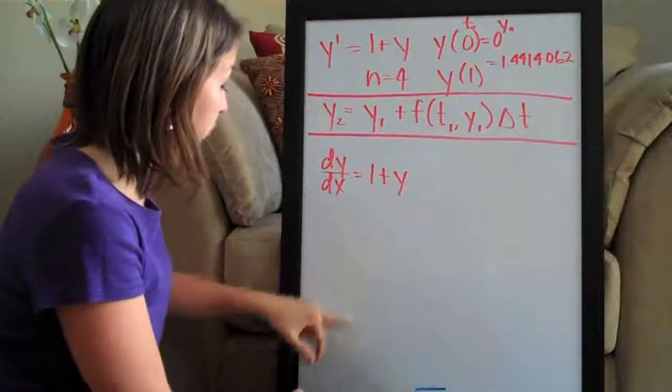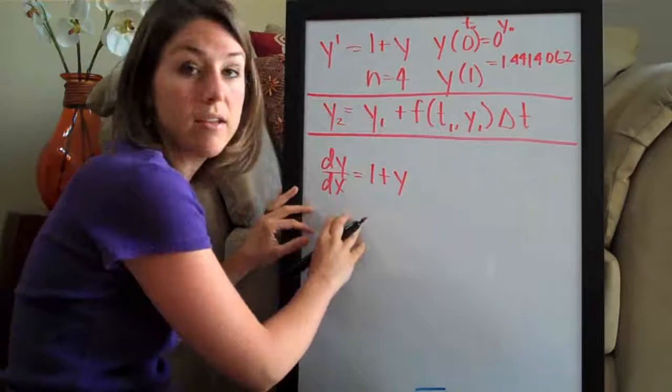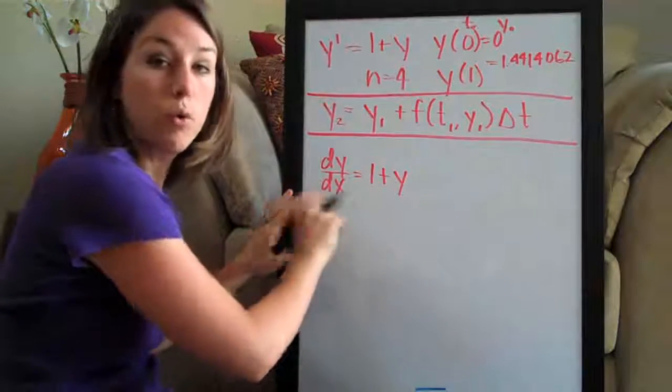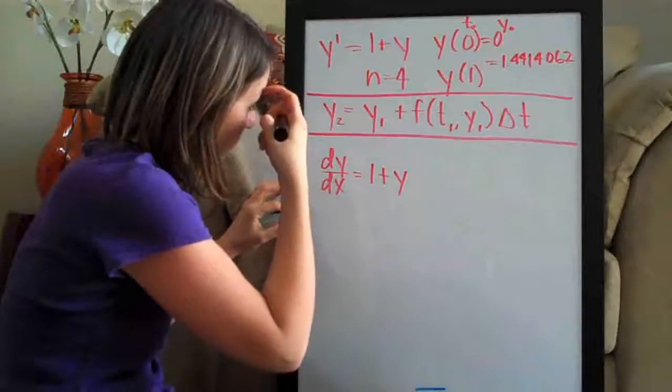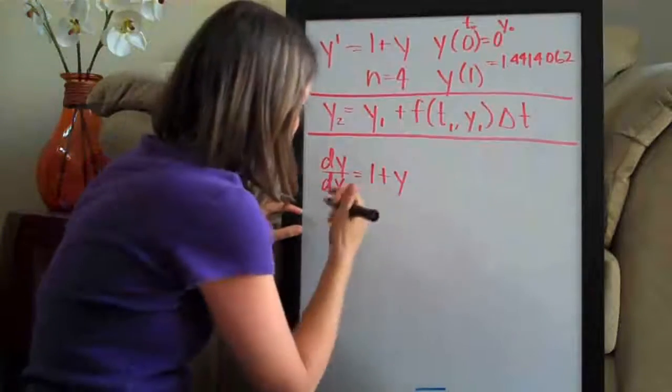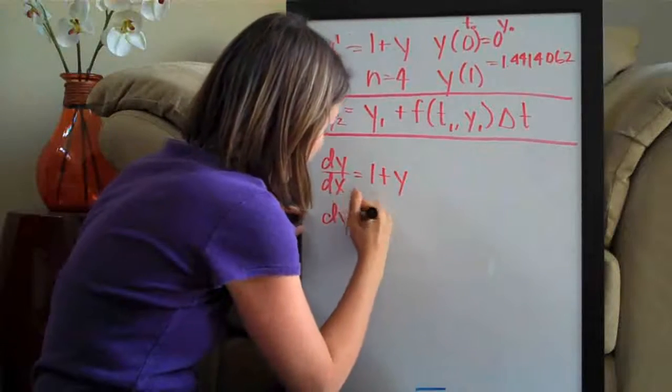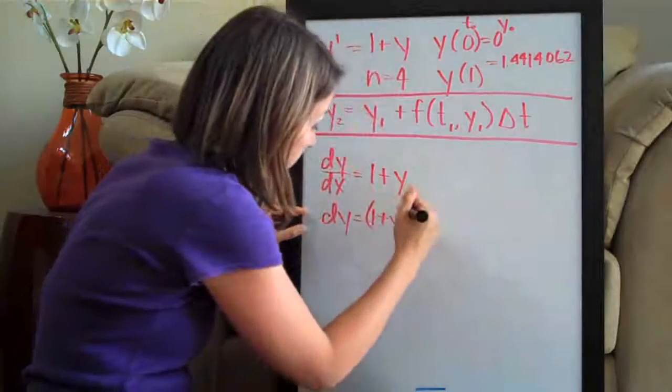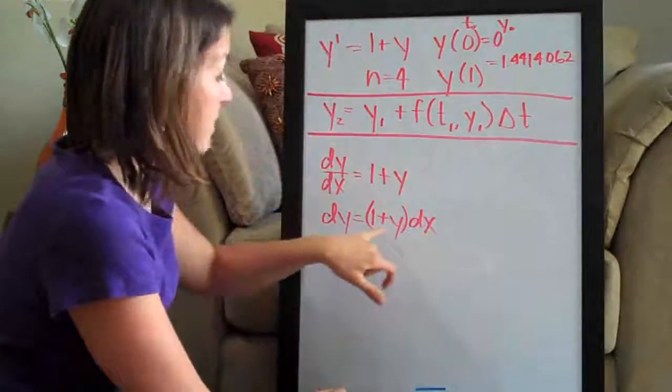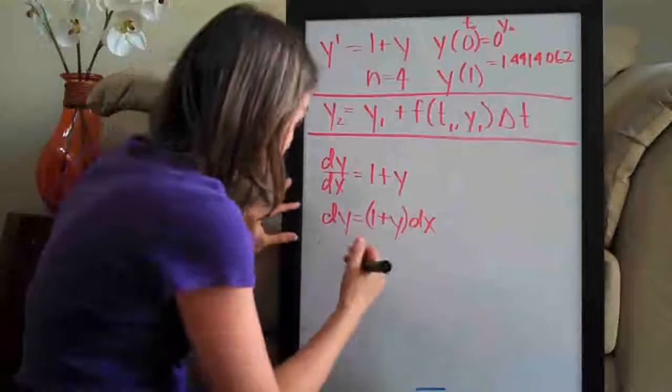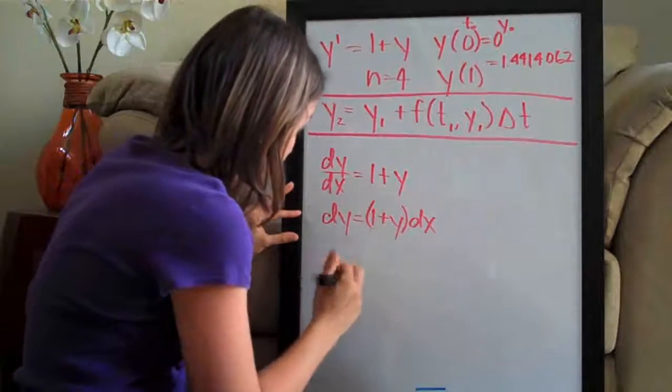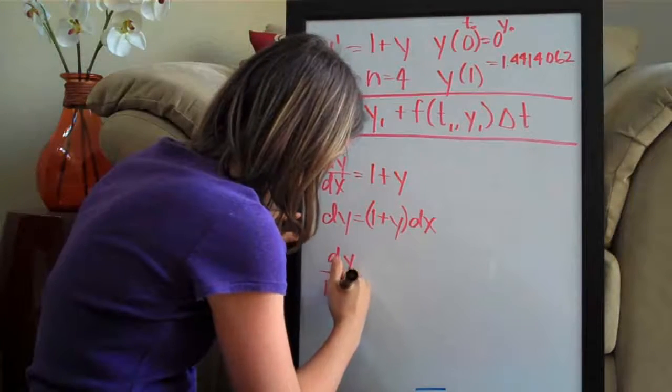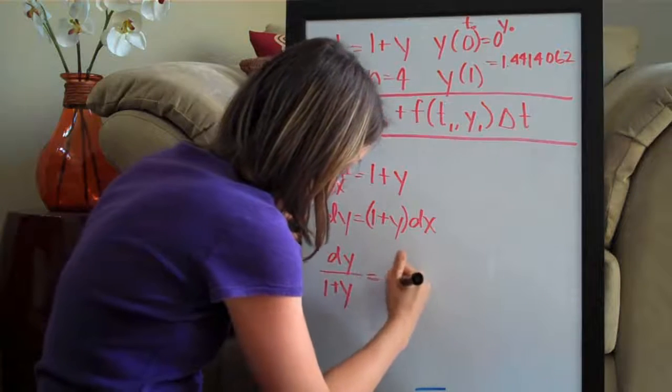So differential equations or separable equations, the goal is to get the variables separated. So you can see we have y's and x's here. We want to get x's on one side, y's on another. So the way that we're going to do that is multiply both sides by dx. So we get dy equals 1 plus y times dx. Then we're going to go ahead and divide both sides by 1 plus y and that'll officially separate our variables for us. So we'll have dy over 1 plus y equals dx.